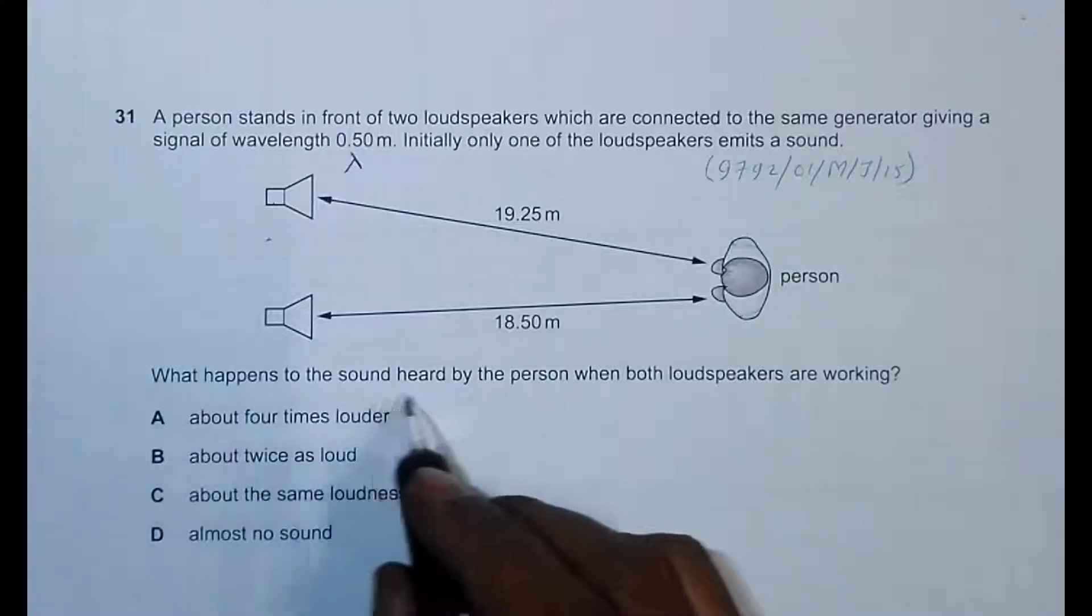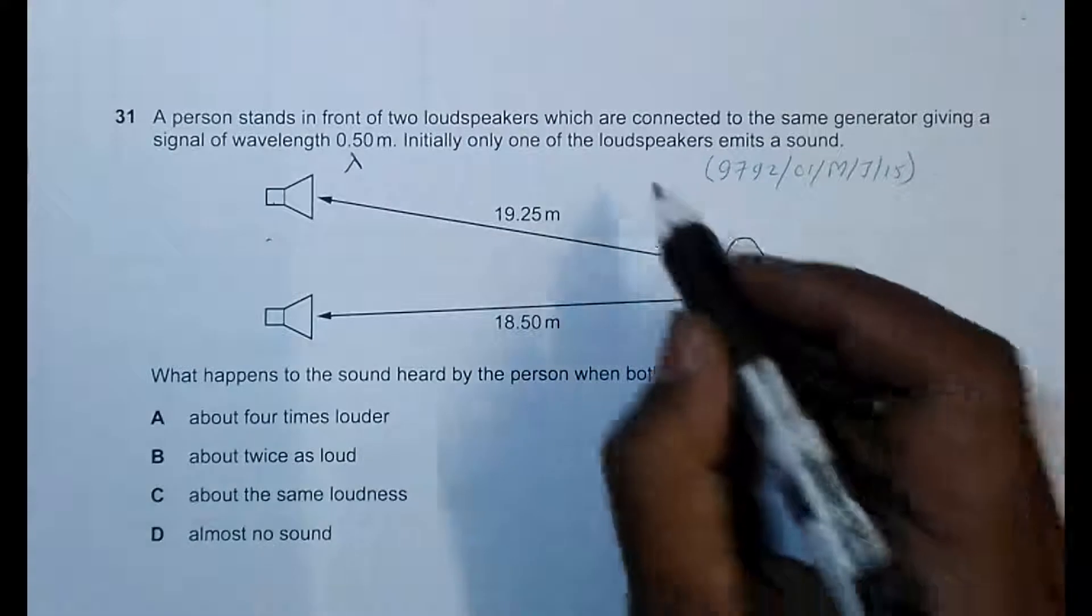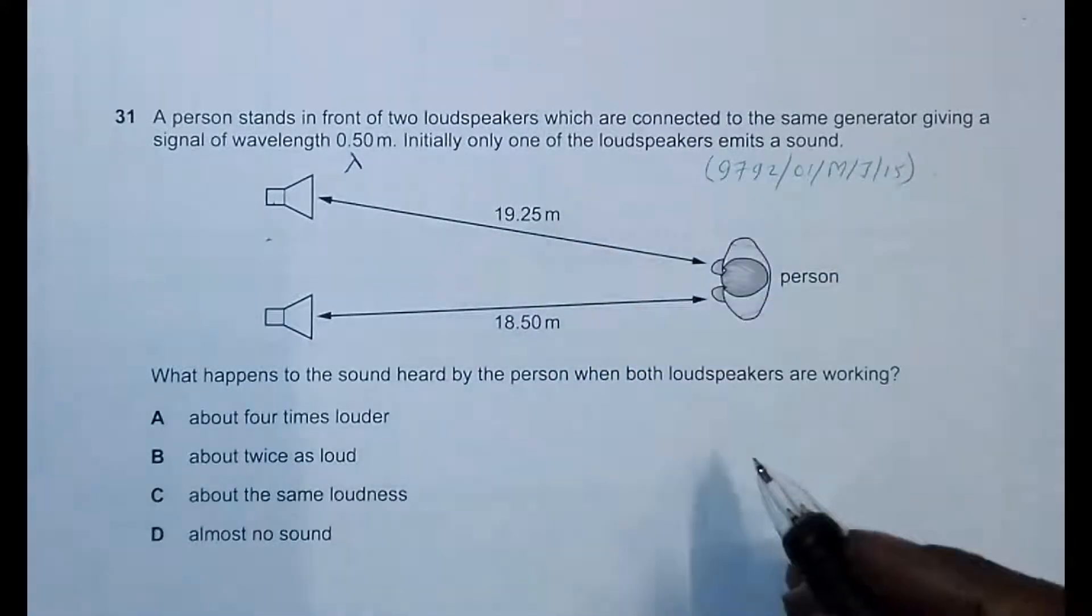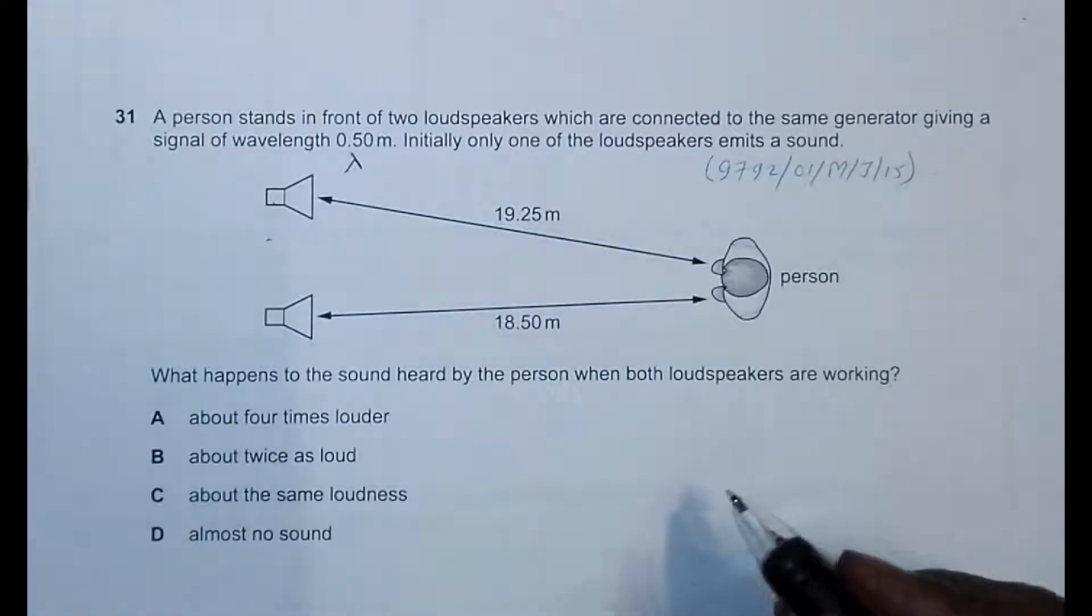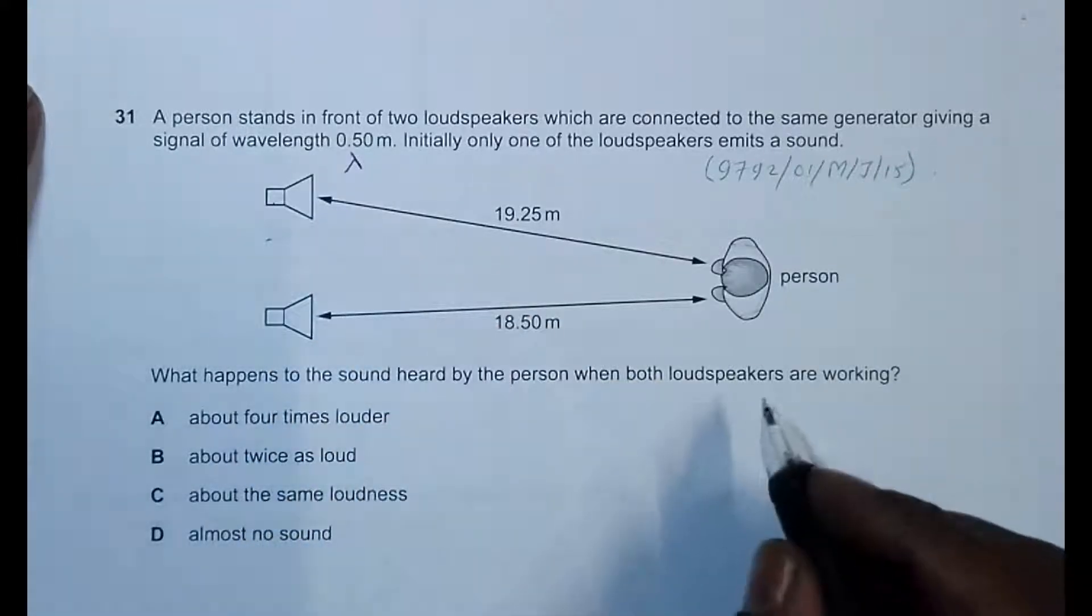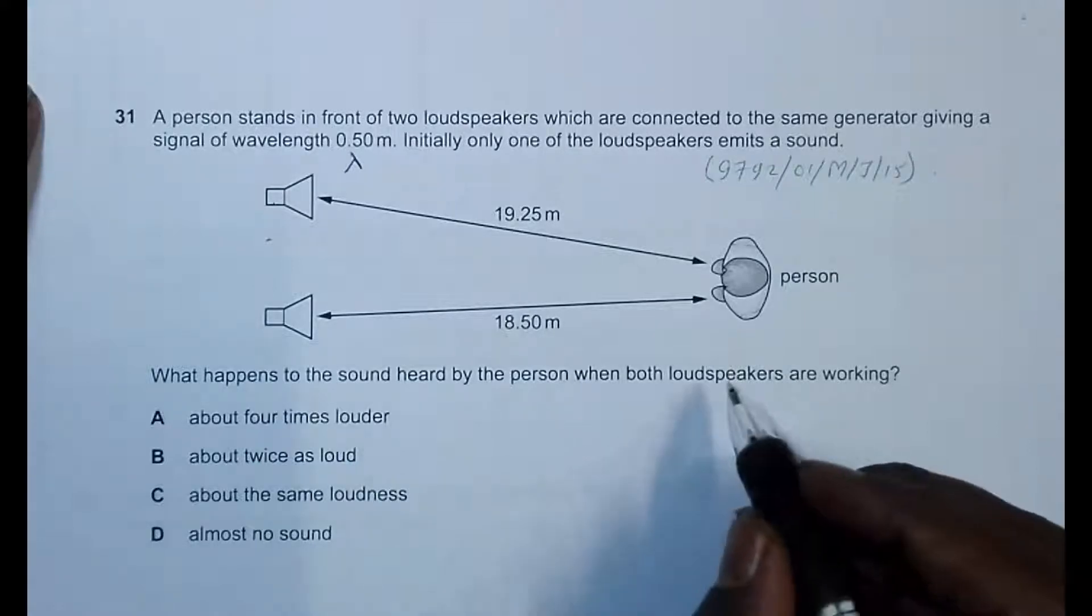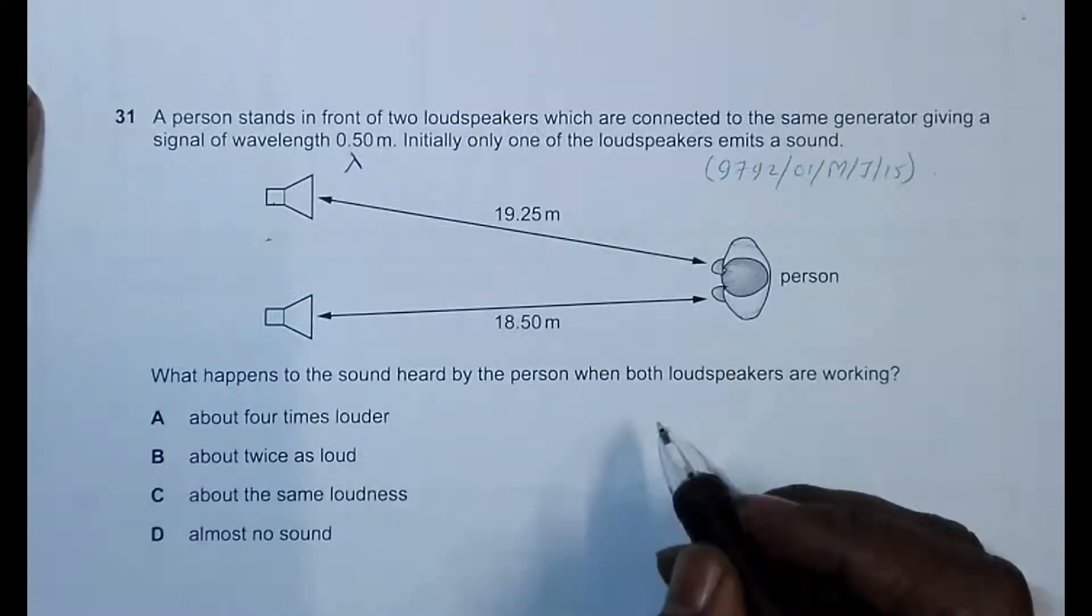What happens to the sound heard by the person when both loudspeakers are working? When only one loudspeaker is working, there is no case of interference. But when two are working and they are giving waves in the same direction, they will definitely interfere with each other. This is the phenomenon concerned with interference.